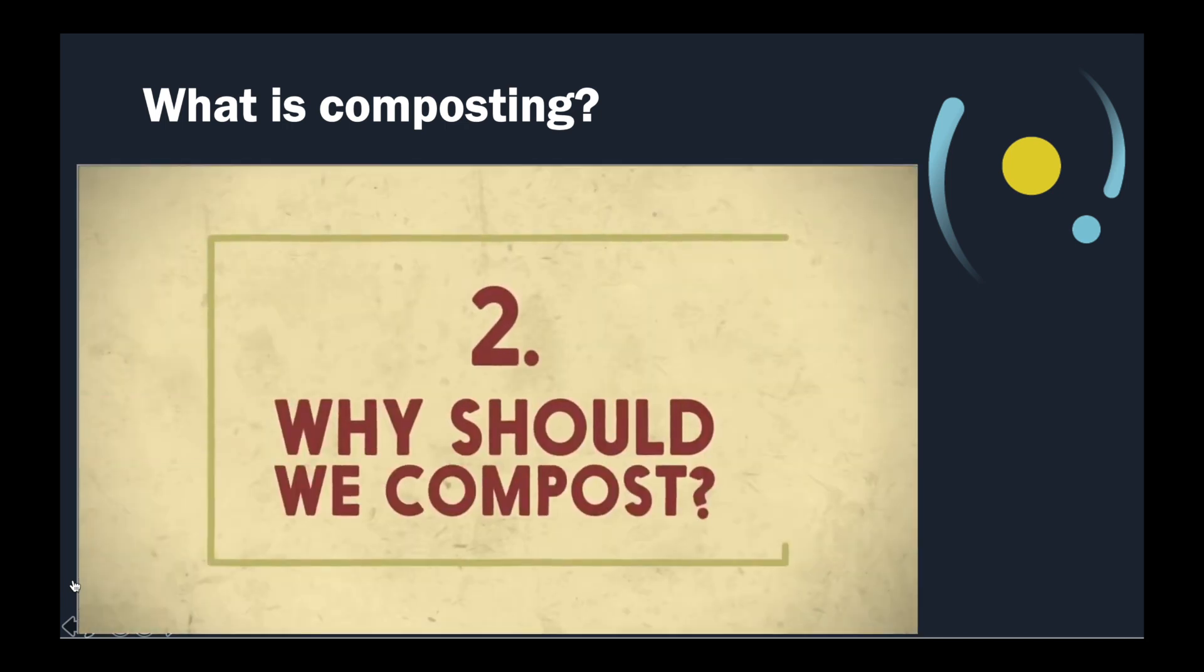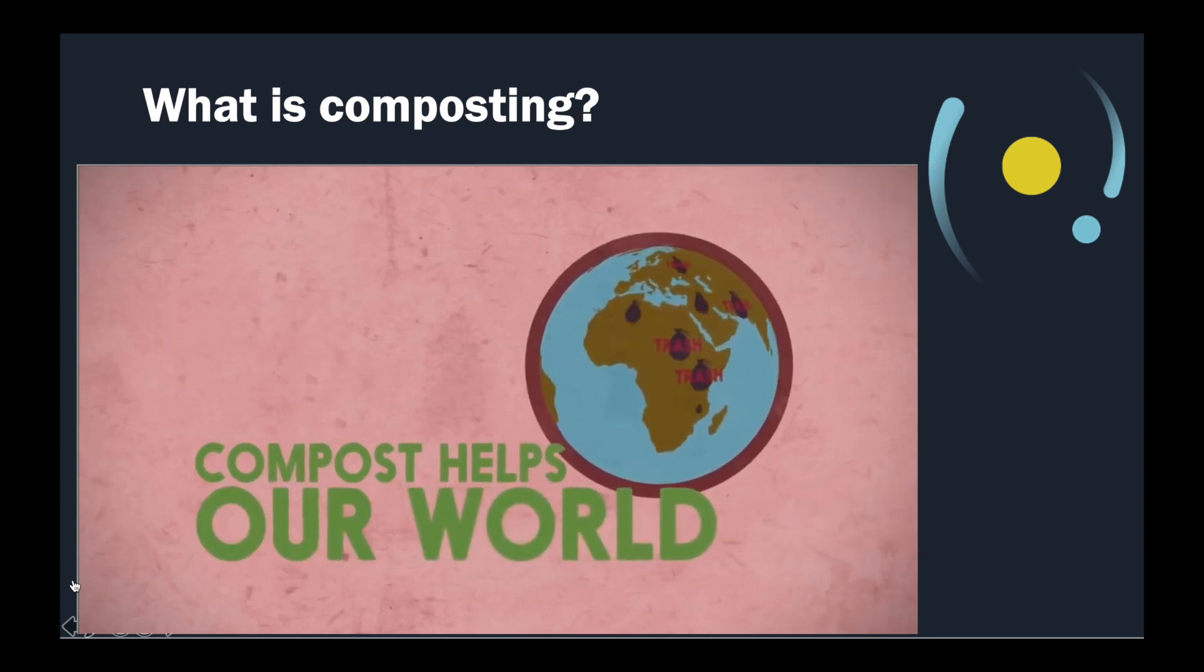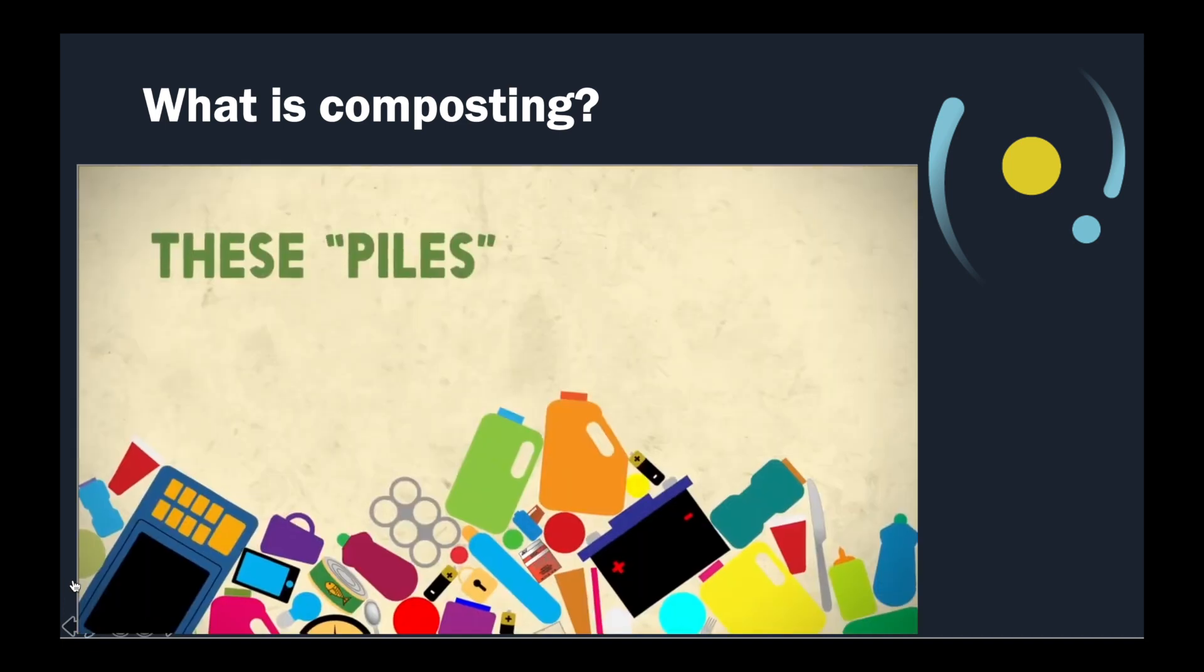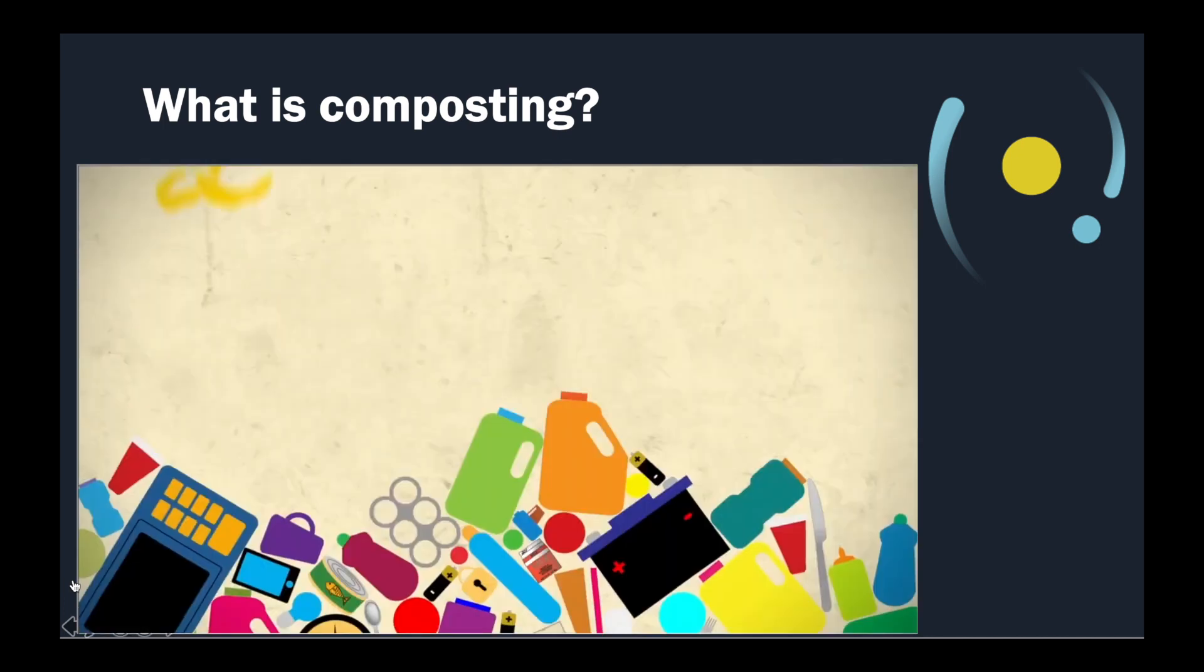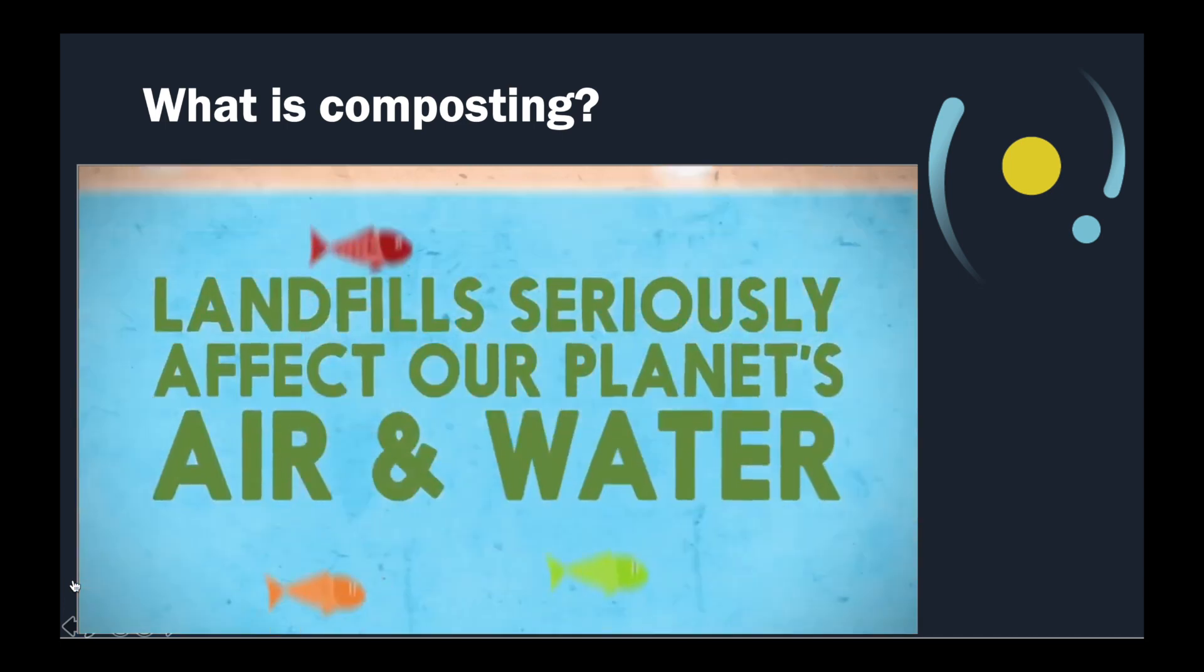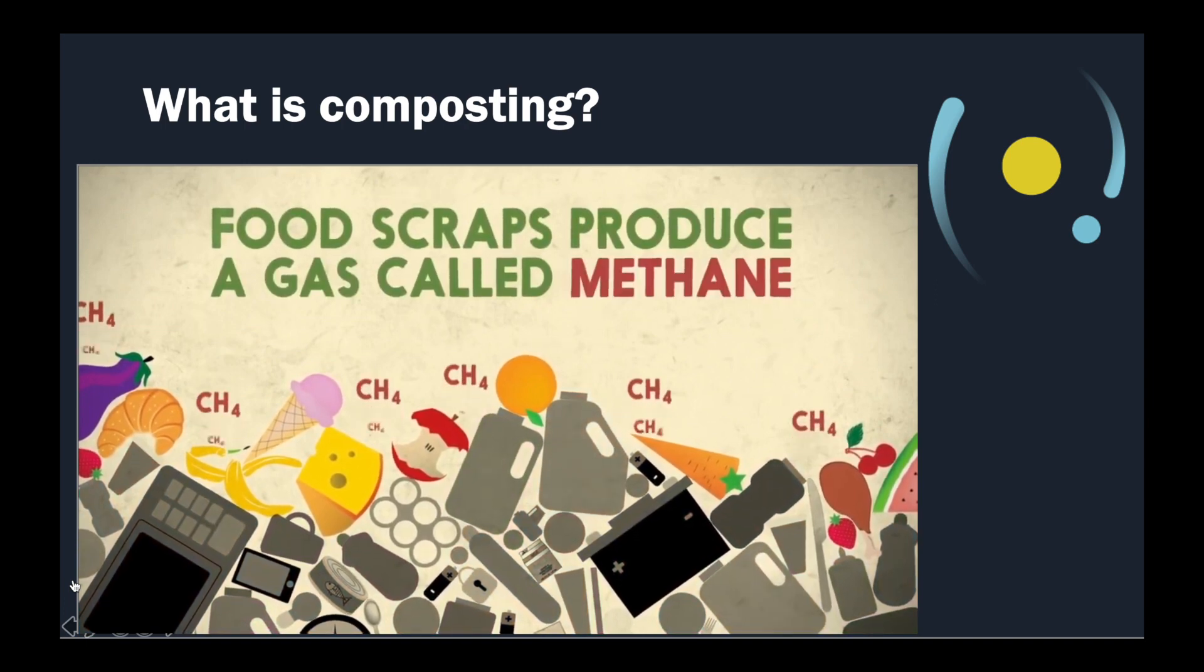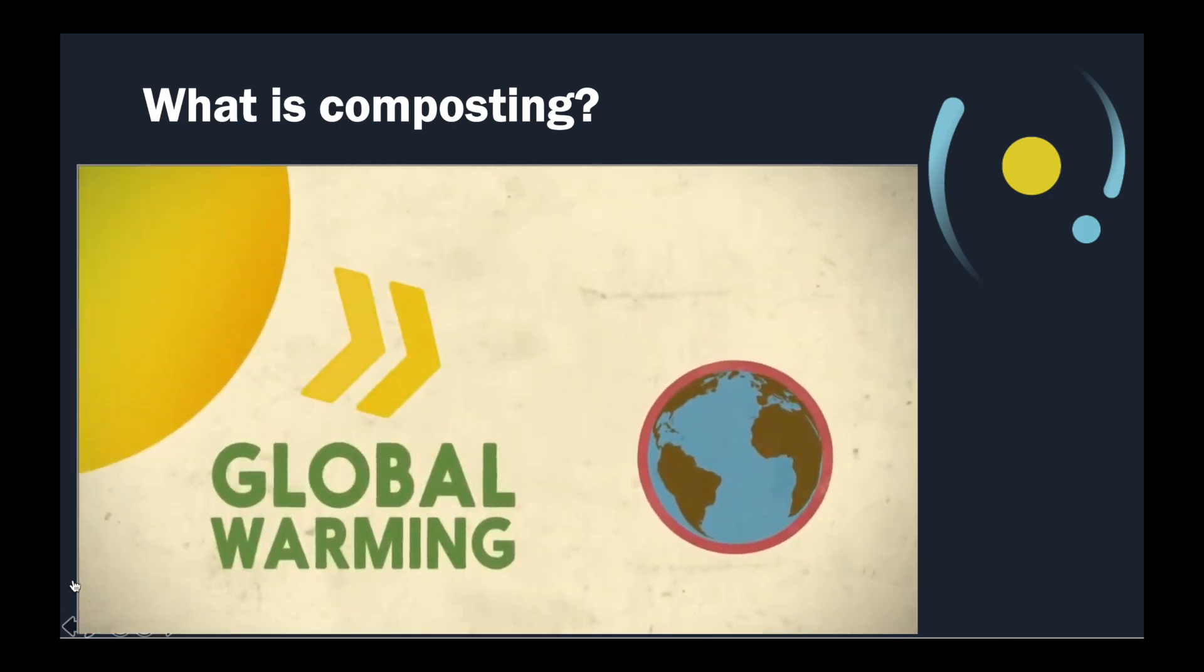And why should we compost? Compost helps our world so it doesn't be all just loaded with trash. Garbage doesn't get used like compost does, because garbage goes into a big pile, wherever that is. These piles are called landfills. When you throw your food into the garbage, this is where it ends up. Landfills seriously affect our planet's air and our water. When sent to a landfill, leftover food, also known as food scraps, will produce a gas called methane. Methane is a powerful greenhouse gas that goes into our air and contributes to global warming in a big way.